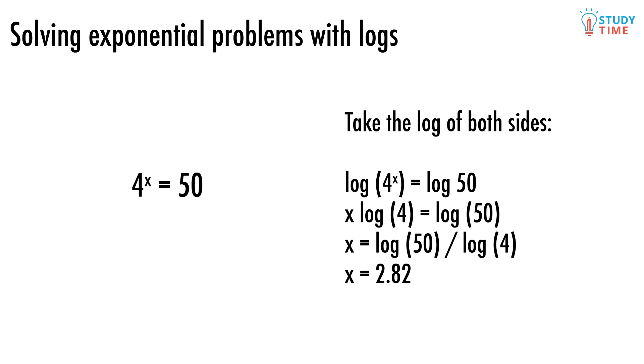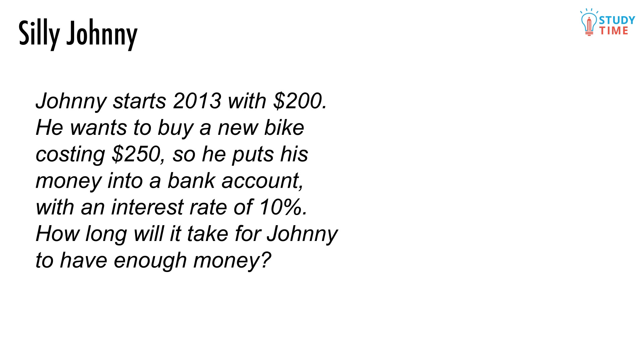If you don't believe us, you can try 4 to the power of 2.82 back on your calculator and you'll hopefully end up with a 50 on the screen. Harder problems will give you a silly little situation about Johnny and his bank account and get you to both form an exponential equation using the numbers you get given and then solve that using logs.